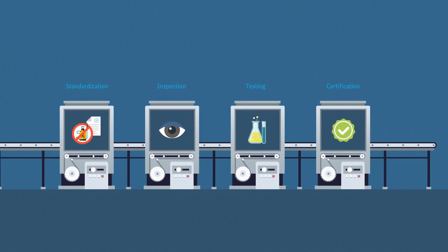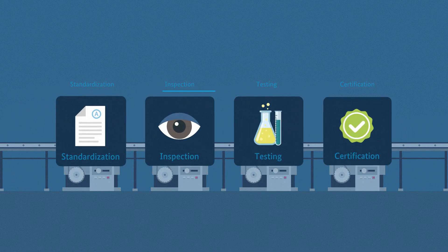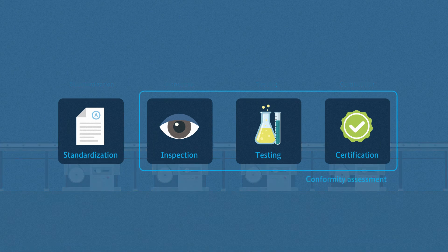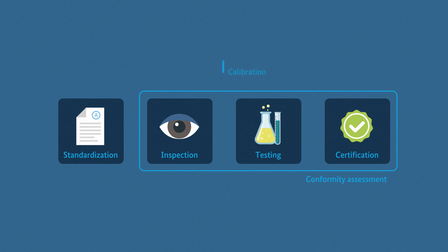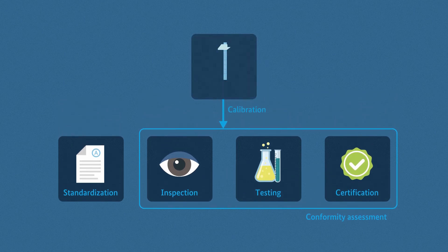Together, testing, inspection, and certification are called conformity assessment. But there are more elements in quality infrastructure. To perform accurate measurements and tests, the laboratories need to have their equipment calibrated on a regular basis. Calibration is one of the tasks within metrology — another element of QI.